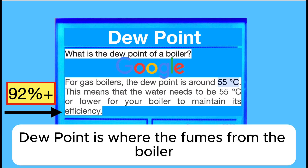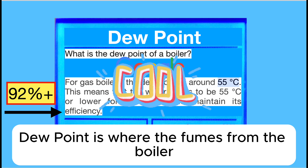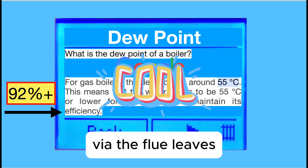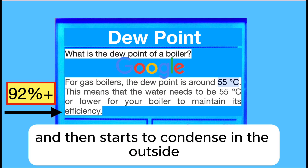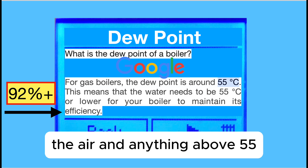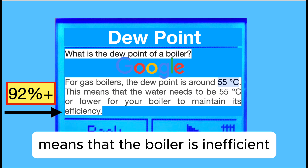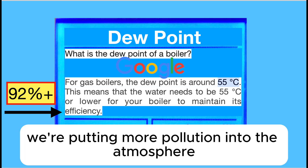Dew point is where the fumes from the boiler via the flue leave and then start to condense in the outside air. Anything above 55 degrees means that the boiler is inefficient, and we're also putting more pollution into the atmosphere.